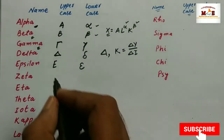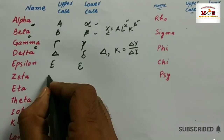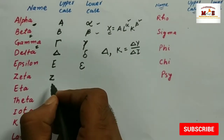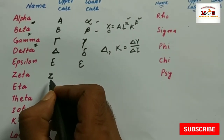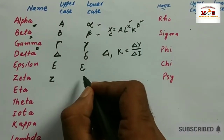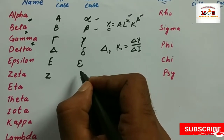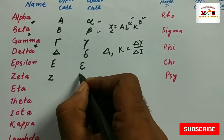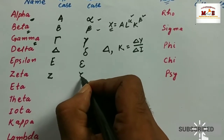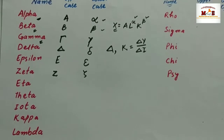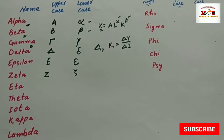And the next one is zeta. Its uppercase is like Z, and lowercase is somewhat difficult to represent — it is written like this.